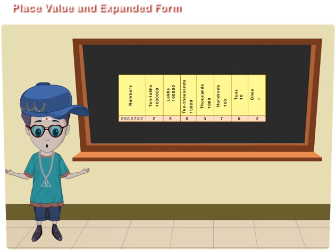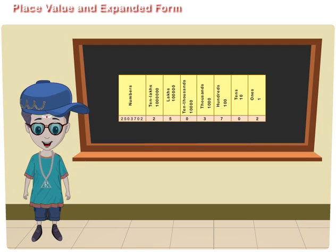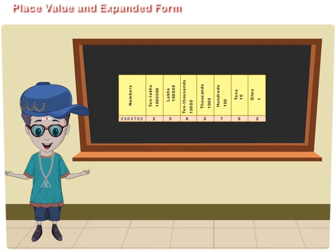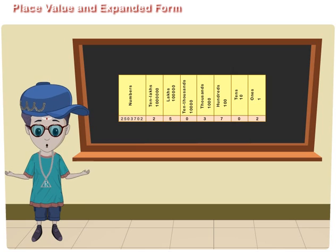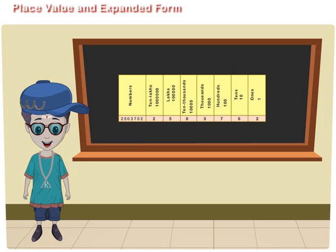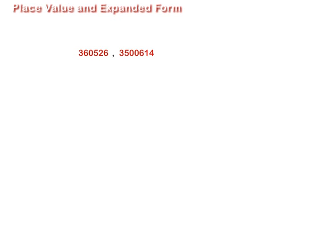Place value and expanded form. Friends, let us enter the digits of the following numbers in the place value chart and find the place value of the digit 3 in 3,60,526, 35,614 and 20,83,569.